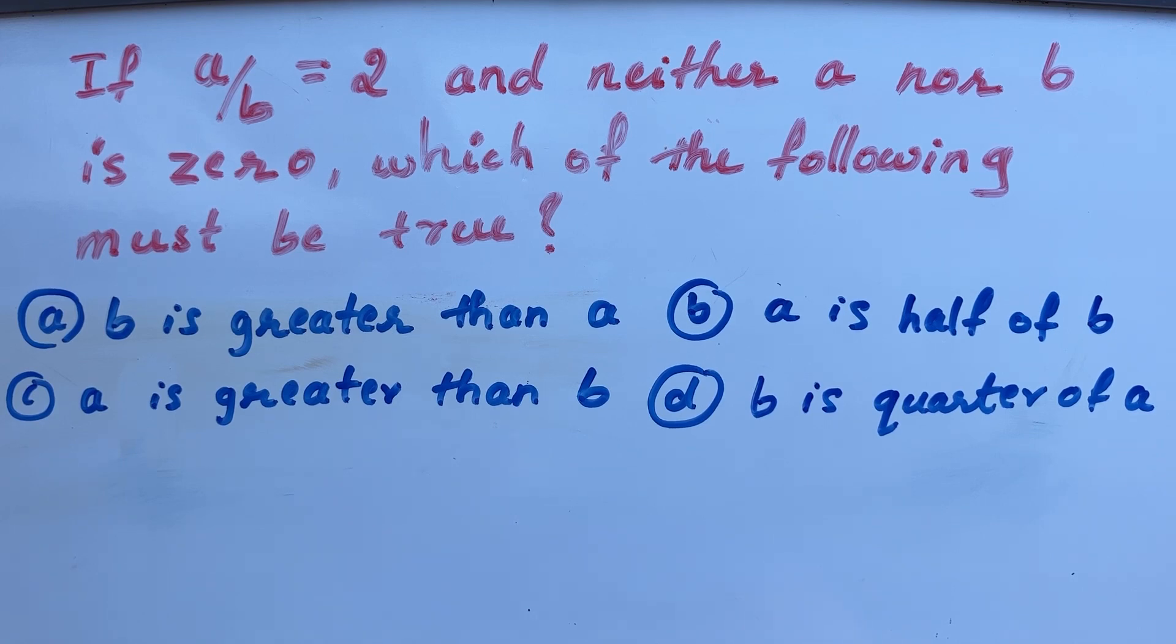Options are, first option, B is greater than A. Second option, A is half of B. Third option, A is greater than B or the last one, B is quarter of A.